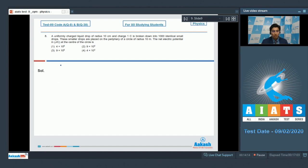When a bigger drop of charge 1 coulomb is split into multiple drops, then each drop will have a charge equal to 1 by 1000 coulombs. When all these drops are placed on the periphery of a circle, the distance of every drop from the centre of the circle would be equal.